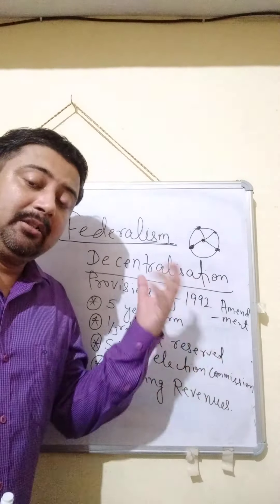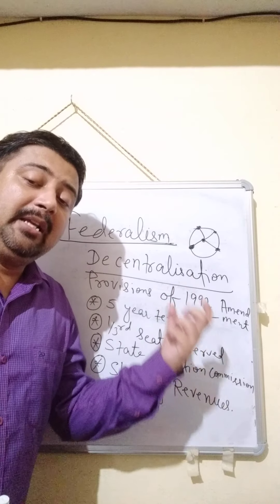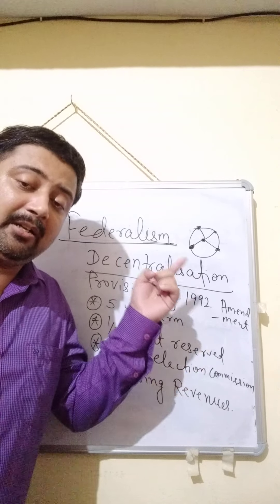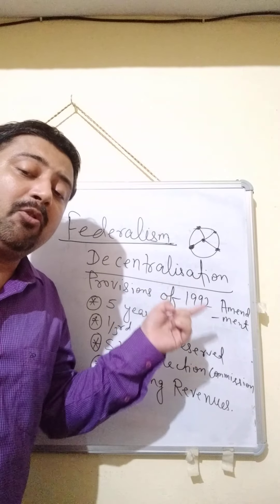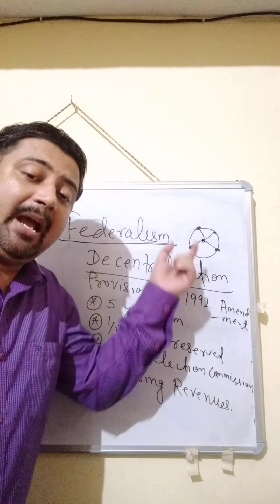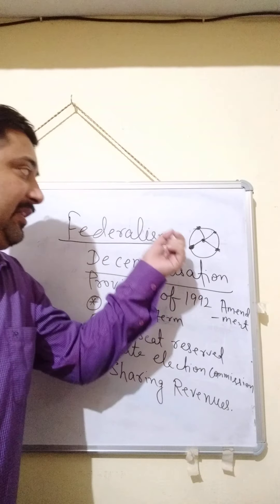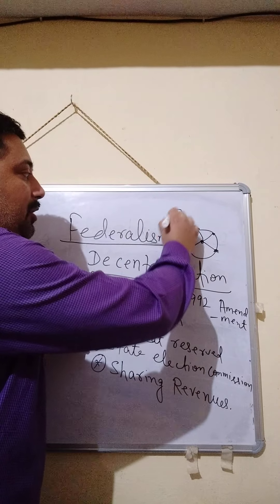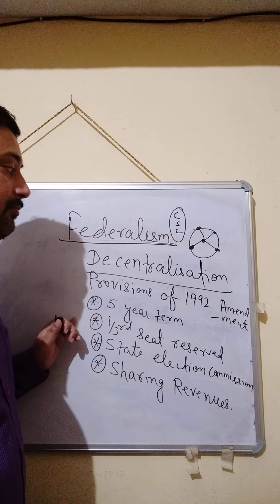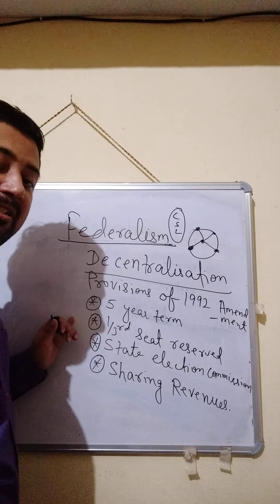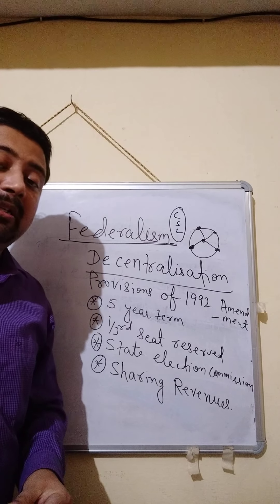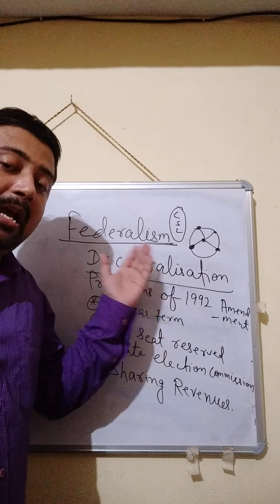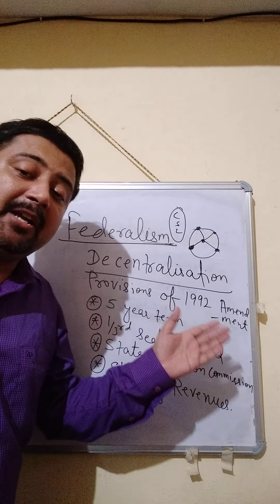The concept of decentralization is very important in the structure of federalism. The same type of relationship that existed between the center and the state now also exists between the state government and the local government. There is a proper chain linking the center, the state, and the local government — this completes the federal structure. That is why we are discussing decentralization and the special provisions made under the 1992 amendment act.